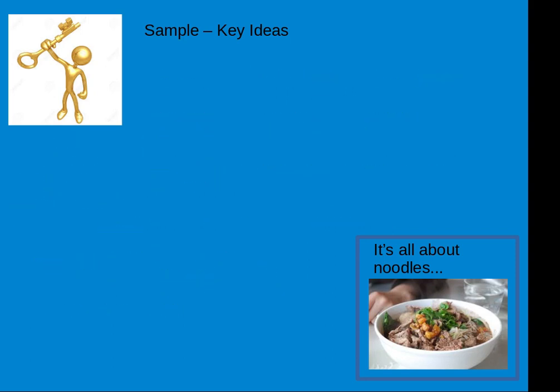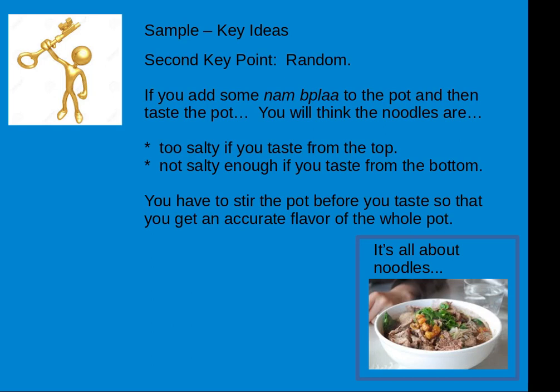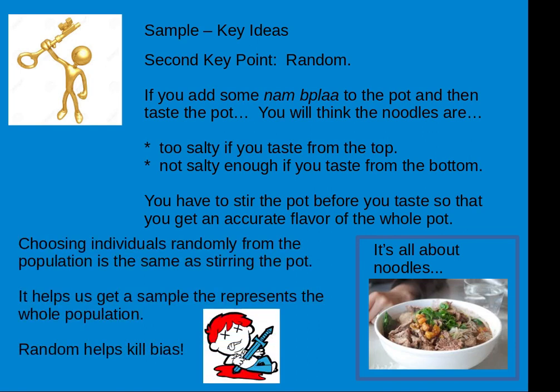The second key idea is about random. If you add some nampla to the pot and then quickly taste it, you'll think the noodles are too salty if you taste from the top where the nampla still is, or you might think there's not enough salt if you take a spoonful from the bottom before the nampla has mixed in. So you have to stir the pot before you taste it to get an accurate flavor of the whole pot. This is what random is about — stirring the pot. Remember, random kills bias.